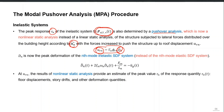D_N — the target displacement for the nth mode — is actually the peak deformation of the nth mode inelastic single degree of freedom system, instead of the nth mode elastic single degree of freedom system as in the case of classical modal RHA or response spectrum analysis.